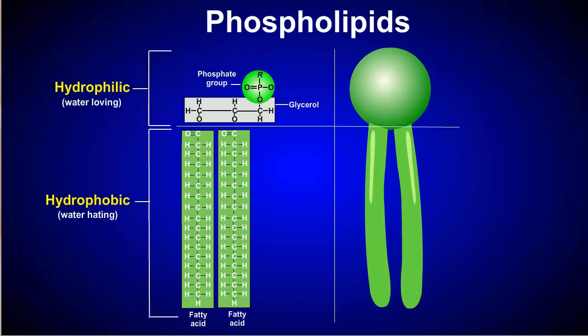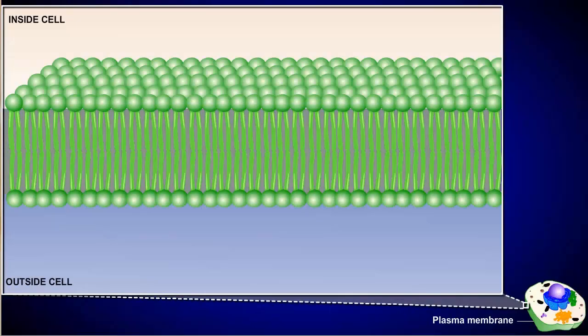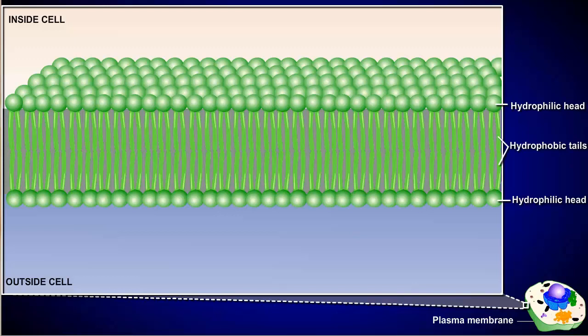Because of these unique properties, when placed in a liquid environment, phospholipids tend to arrange themselves into a phospholipid bilayer, so that only the hydrophilic heads interact with a watery environment, and the hydrophobic tails crowd inward, away from the water.